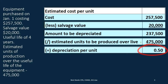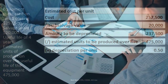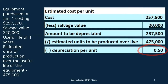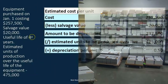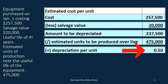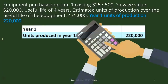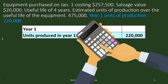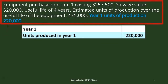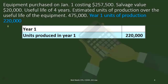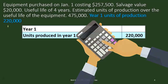Note the extra information required here: we need to know the total units the equipment will produce — similar to estimating years — and we need to count the units produced each year, which could be a daunting task depending on automation. The problem must give us the number of units produced each year in order to calculate annual depreciation.